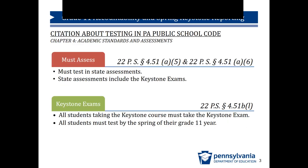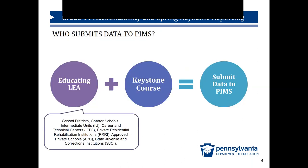This slide provides the citation and PA school code about testing and the Keystone exams. Students must be assessed in state assessments, which include the Keystones. All students taking a Keystone course must take the Keystone exam, and all students must test by the spring of their grade 11 year. Any entity that teaches a Keystone-related course must assess the student in algebra, biology, and literature Keystones as end-of-course exams. Keystone courses are designated in PIMS by the LEA as trigger courses. Designating a course as such is a local decision and not mandated by PDE. LEAs should look at the content standards before designating the course in PIMS to ensure students have the requisite knowledge to demonstrate proficiency.